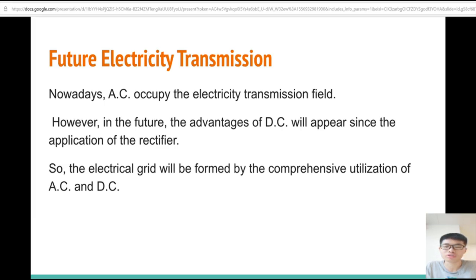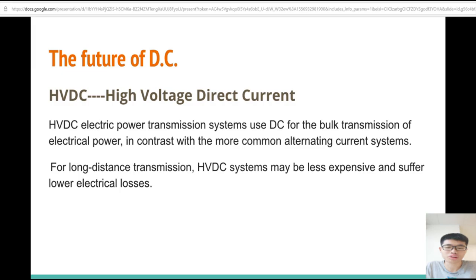HVDC electric power transmission system uses DC for the bulk transmission of electrical power in contrast with the more common alternating current system. For long-distance transmission, HVDC systems may be less expensive and suffer lower electrical losses. A comprehensive HVDC system includes the conversion system, transmission system, and connection system. Conversion system has two major equipments, including the converter and converter transformer. Converter transformer changes the voltage of AC to a certain voltage that can be used by the converter, and the converter changes AC to DC.